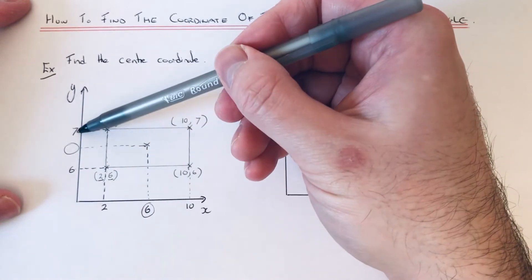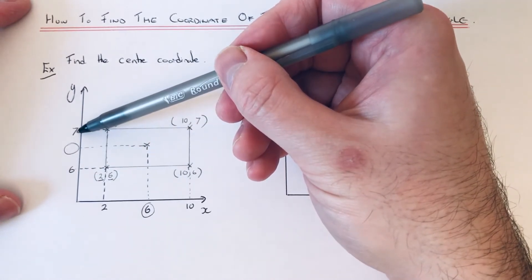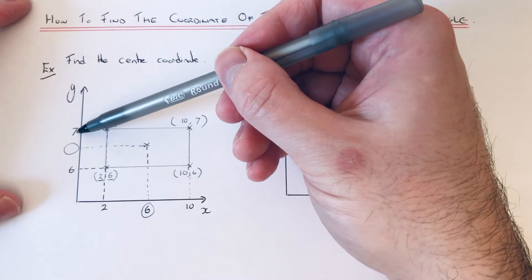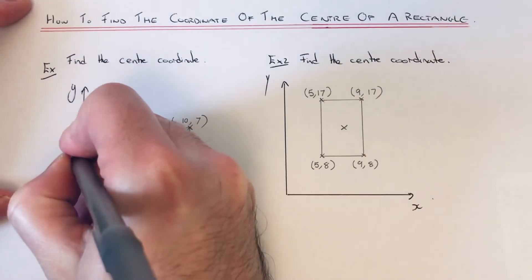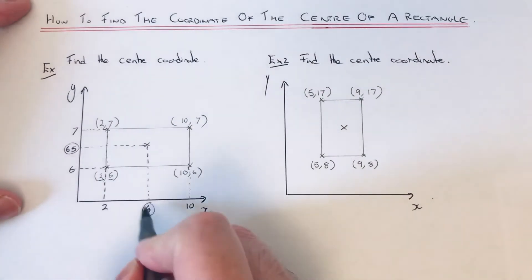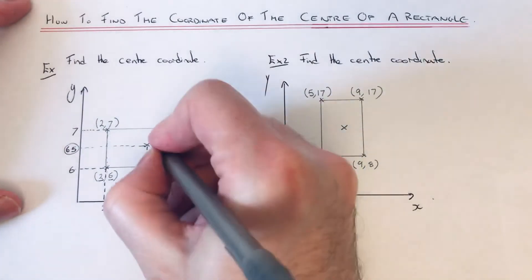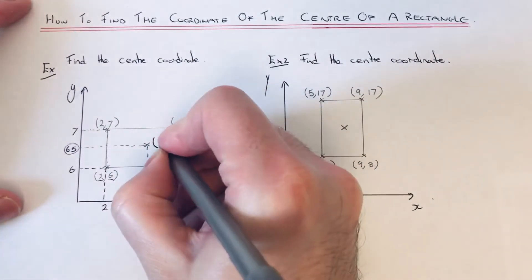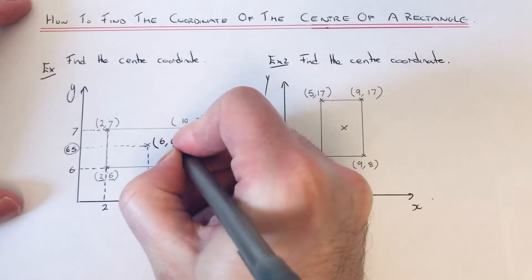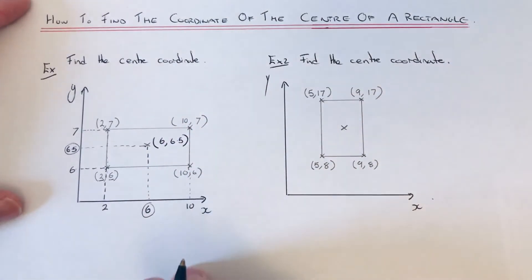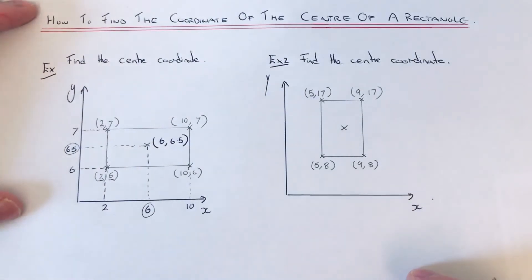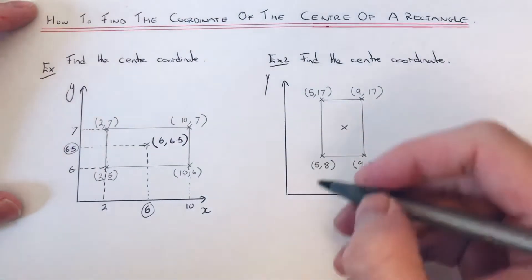We also need to find the number in the middle of six and seven for the y-coordinate. Add six and seven to get thirteen, then halve it to get six point five. So the center point of the rectangle is (6, 6.5). Let's have a look at one more example.